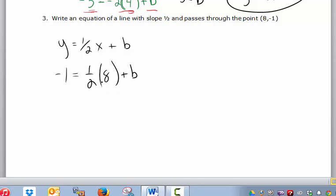8 is the x value, plus b. So I plug in my x to x, and y to y, and then I solve. Negative 1 equals 1 half of 8 is 4, plus b, and I do my algebra, subtract 4 from both sides to solve for b, and b equals negative 5. And I state my answer: y equals 1 half x minus 5.